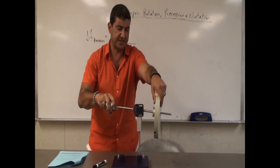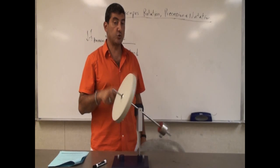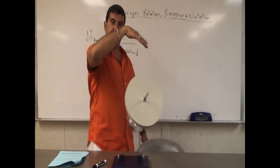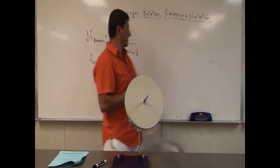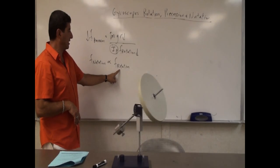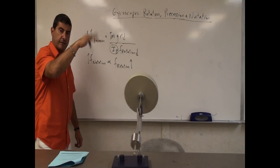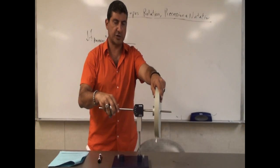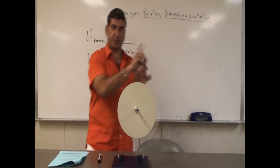Now what if I rotate it fast? Okay, now it's doing something else that's noticeable. Not only is it precessing, but it's bobbing up and down. That's called nutation. So the nutation frequency depends on the rotational frequency. If I spin it fast, its nutation frequency is more noticeable — it's faster. Look at that. You see? That's called nutation.